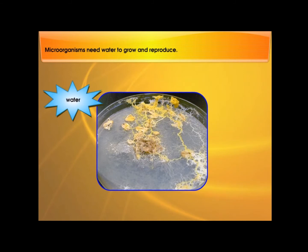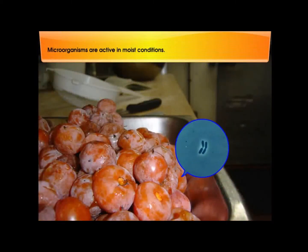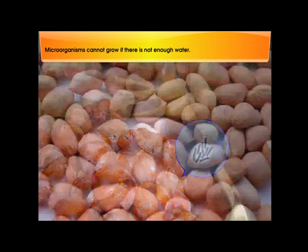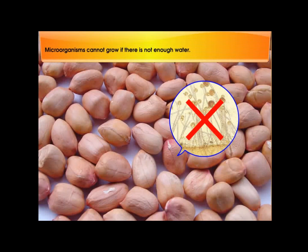Microorganisms need water to grow and reproduce. Microorganisms are active in moist conditions. Microorganisms cannot grow if there is not enough water.